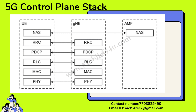In the protocol stack we have two parts: one is the control plane and one is the user plane. In the control plane we do signaling — whatever signaling messages you send to connect between two entities. Mainly the RRC and NAS layers play the role of the control plane, where signaling messages are present. These NAS and RRC layers have many messages which help establish the connection between two entities.